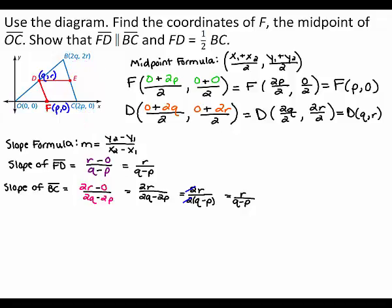Now, as you can see, both segments have a slope of r divided by the quantity (q minus p). Therefore, because they have the same slope, segment FD is parallel to segment BC.